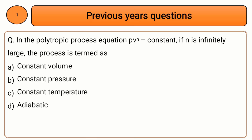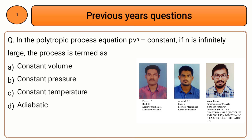First question: in the polytropic process equation PV raised to n is a constant. If n is infinitely large, the process is termed as — option A: constant volume, option B: constant pressure, option C: constant temperature, option D: adiabatic process.